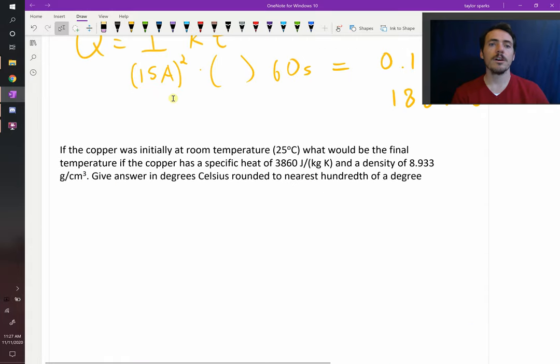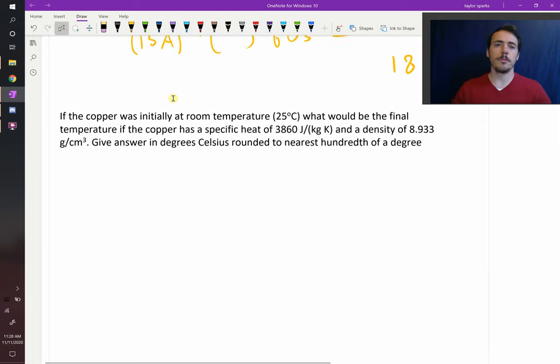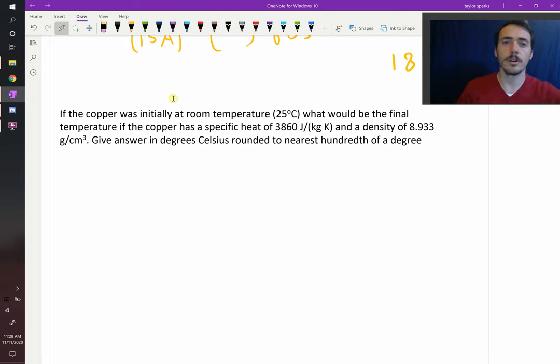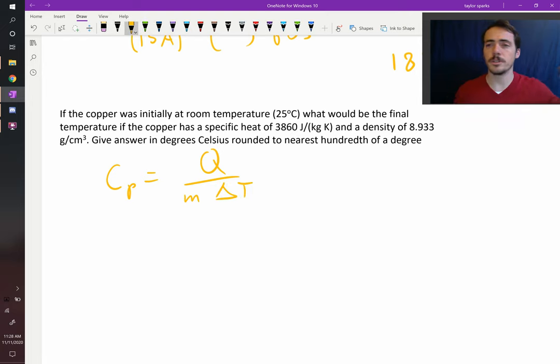Now let's do another example. If the copper was initially at room temperature (25°C), what would be its final temperature if we knew the specific heat of 3860 J/(kg K) and its density of 8.933 g/cm³? Give your answer in Celsius to the nearest hundredth of degree. We can do this. We now know the heat that went into it.